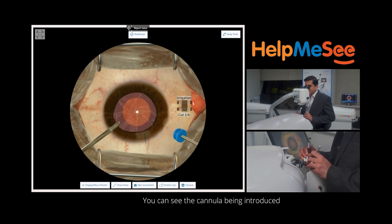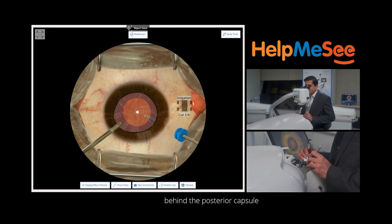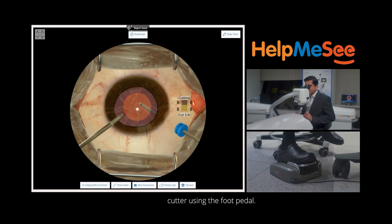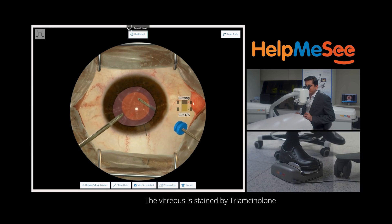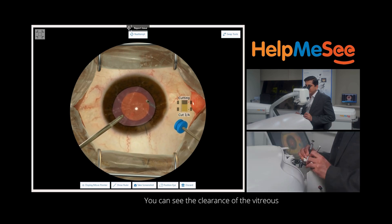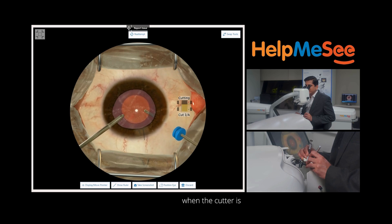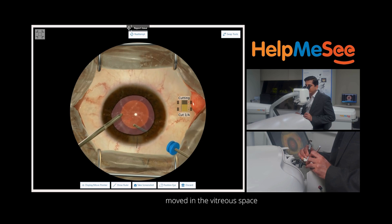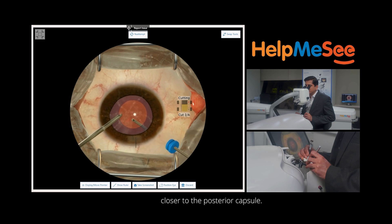You can see the cannula being introduced and visualize it behind the posterior capsule in the Berger space. We start the vitrectomy cutter using the foot pedal. The vitreous is stained by triamcinolone acetonide that's why it is whitish in color. You can see the clearance of the vitreous when the cutter is moved in the vitreous space closer to the posterior capsule.